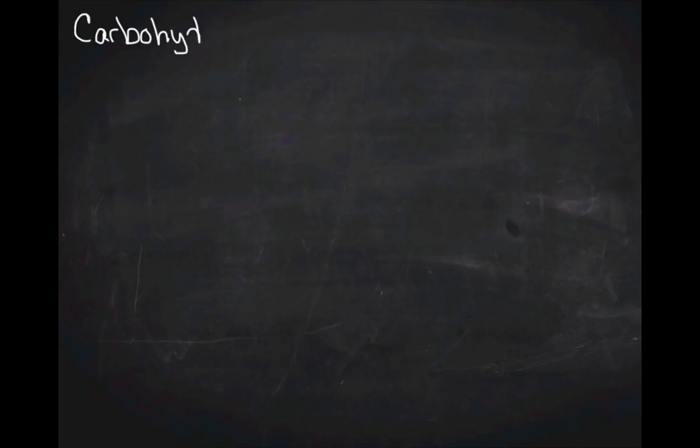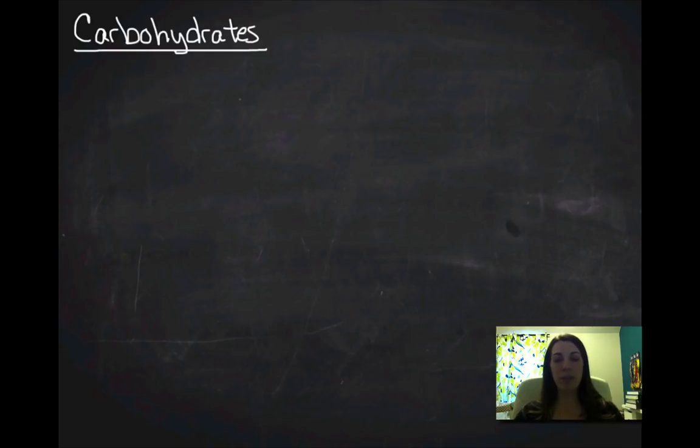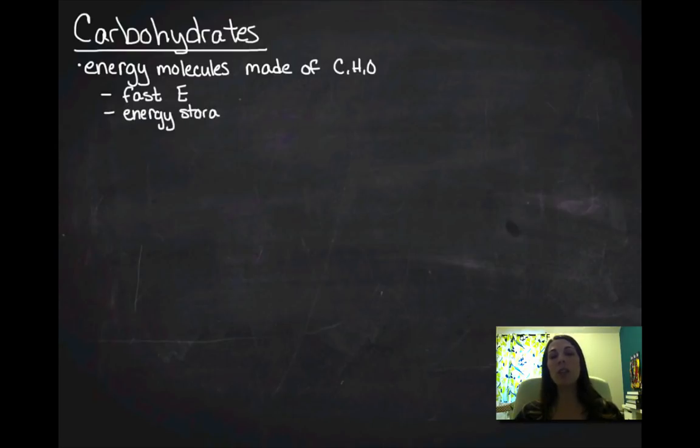Hi, this is Mr. Lozier and these are your notes on carbohydrates. So carbohydrates, one of my favorite foods. Carbohydrates are primarily an energy molecule and they're made of carbon, hydrogen, and oxygen. And we use them for fast energy and we also use them for some energy storage in plants and in animals.